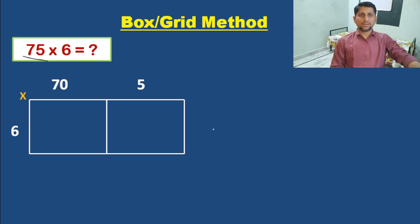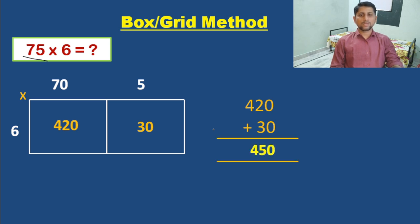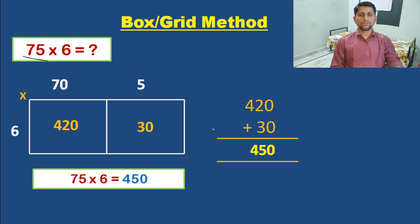Multiply each number in the column by each number in the row. 6 into 70, that is 420. Now 6 into 5, that is 30. What we have to do: just add the numbers in the boxes, 420 plus 30, then we will get the answer 450. So this is the answer for 75 into 6, equals 450.